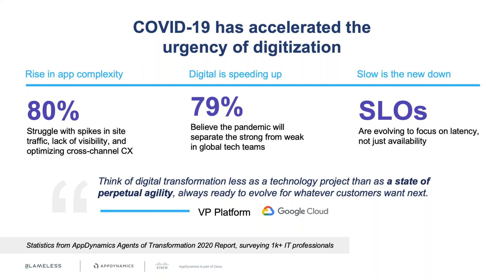Roughly 79% see COVID-19 accelerating digital transformations, and companies that are not agile enough are expected to fail — not just in a simple agile process manner, but in a way that requires perpetual agility. Even before COVID-19, the industry was getting better at preventing outages by investing in DevOps, resiliency, and SRE, which paid off with fewer outages.